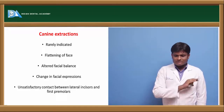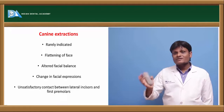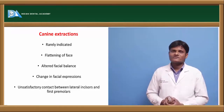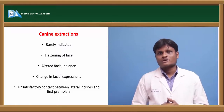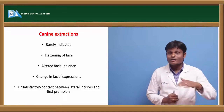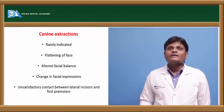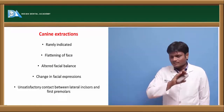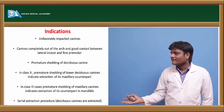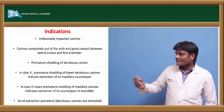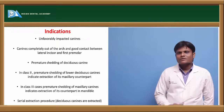Canine extractions in orthodontics are rarely indicated. Their extraction causes flattening of the face and alteration of facial expressions. The canine is supposed to be the corner tooth of occlusion, and its extraction causes flattening of the face, alteration in facial expression, and the contact between the lateral incisor and first premolar is unsatisfactory, leading to periodontal problems. So most of the times we do not go for extraction of canines unless they are severely impacted, grossly decayed, malformed, or traumatized. In Class 3 cases, premature shedding of maxillary canines indicates extraction of its counterpart.